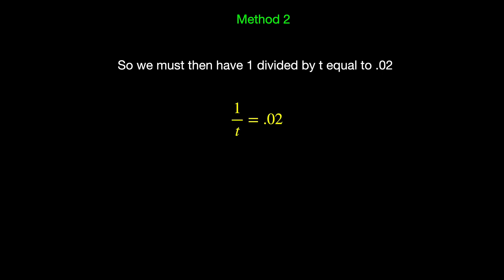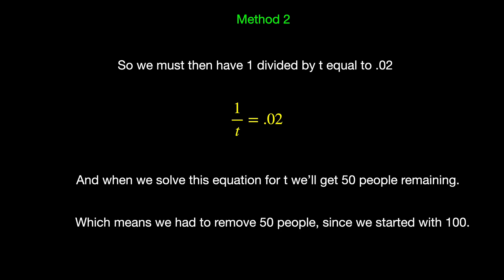So we must then have 1 divided by t equal to 0.02. And when we solve this equation for t, we'll get 50 people remaining, which means we had to remove 50 people since we started with 100.